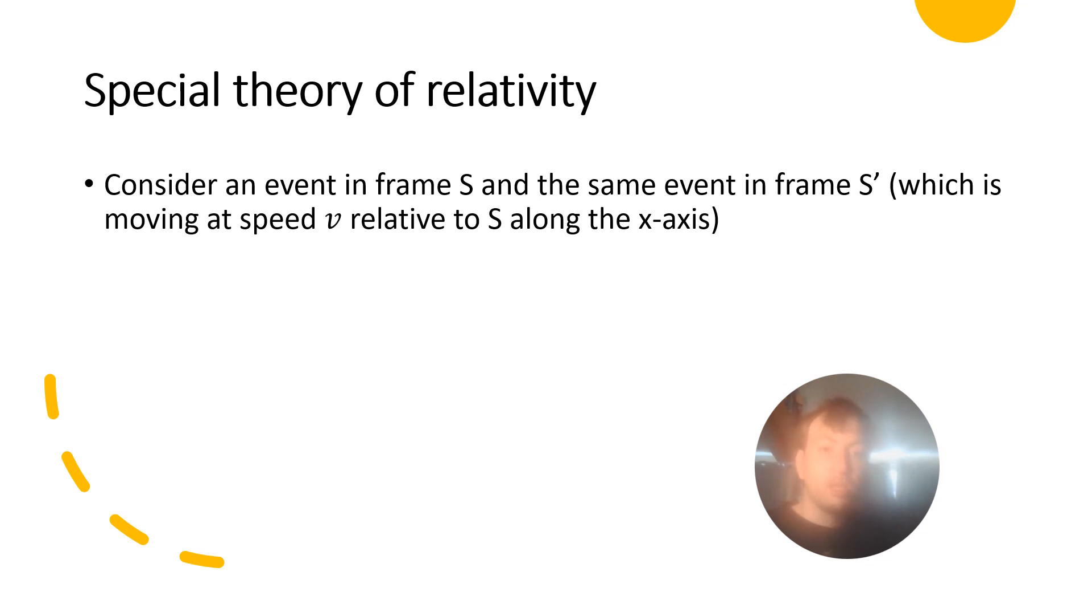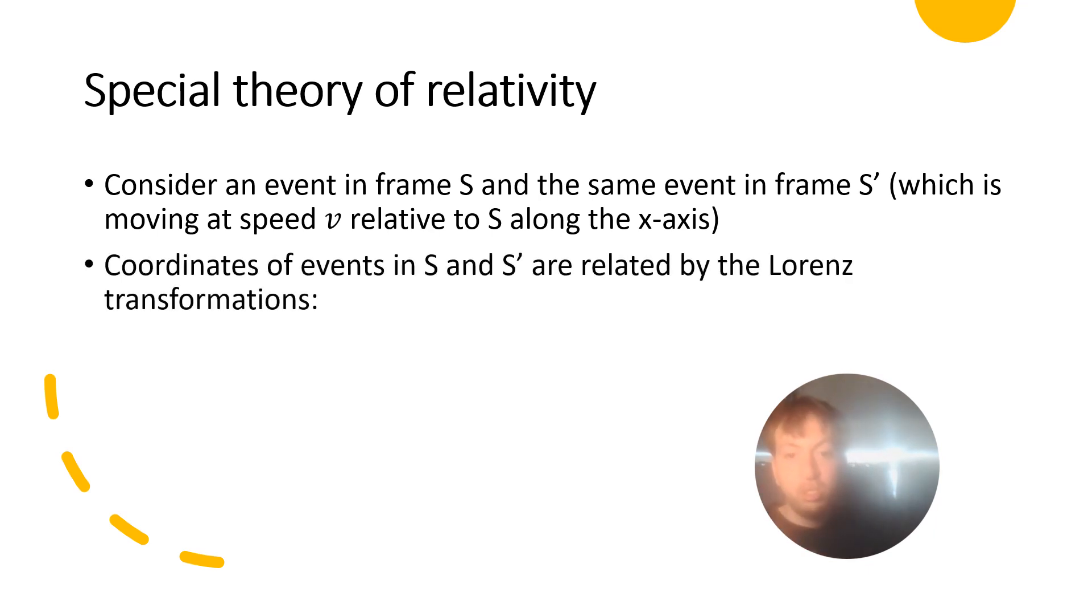But as a summary, special relativity says that if we consider a reference frame S, and consider the same event happening in a different reference frame S prime, which is moving at speed v relative to S along the x axis, then the coordinates of the events in spacetime in S and S prime are related via the Lorentz transformations, which are given below.